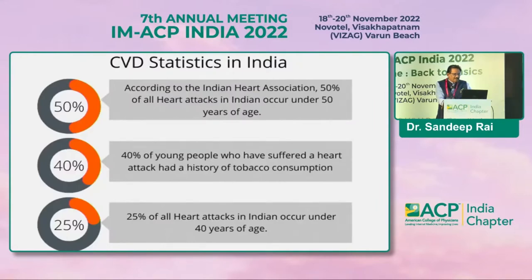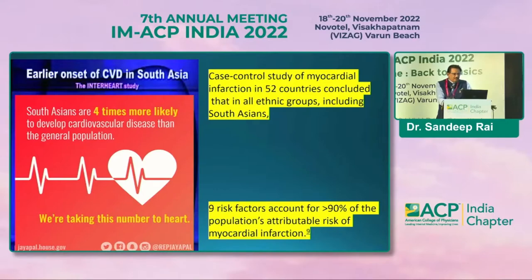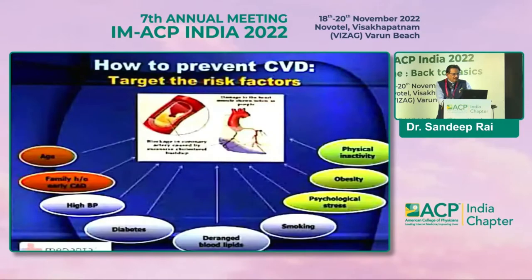Statistics in India tell that 25% of all heart attack patients are under the age of 40 years, with about 50% under the age of 50 years. What we see peculiarly in India is earlier onset of cardiovascular disease, especially in Southeast Asia — four times more likely. The INTERHEART study, done in 52 countries with all ethnic groups including South Asians, showed that 90% of people with cardiovascular diseases share about nine common risk factors.